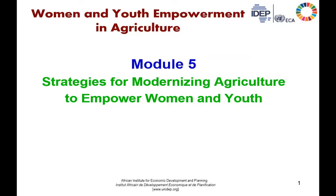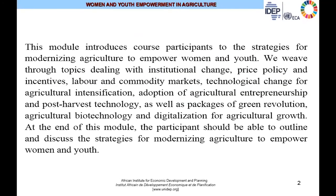Welcome to the course Women and Youth Empowerment in Agriculture. This is Module 5 on Strategies for Empowering Women in Agriculture, zeroing in on modernizing agriculture. What can we do to modernize African agriculture so that women and youth will become empowered and be attracted into the sector? The module introduces course participants to strategies for modernizing agriculture.